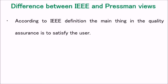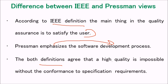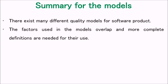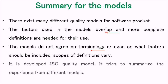The difference between these two views: according to the IEEE definition, the main thing in quality assurance is to satisfy the user, while Pressman emphasizes the software development process. Both definitions agree that high quality is impossible without conformance to specification requirements. In summary, many different quality models exist for software products, the factors overlap, and more complete definitions are needed. Models do not agree on terminology or which factors to include, so the ISO quality model was developed to summarize experience from different models.